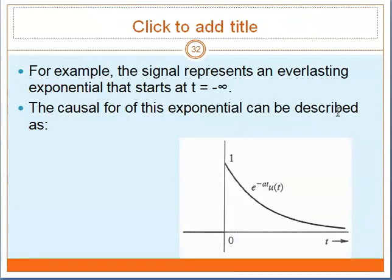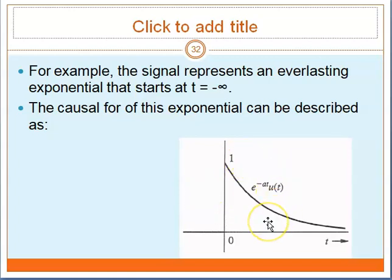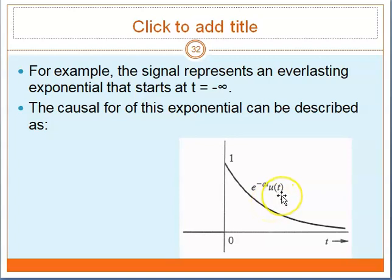For example, the signal represents an everlasting exponential that starts at T equal to minus infinity, as shown in this diagram. The causal version of this exponential can be described as follows: if you want your exponential to start when T is equal to 0, or in other words you want to make it a causal signal, just multiply it by u(t), which is a unit step function.